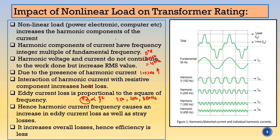Here you can see the nature of the harmonic current. If we extract the component of it, this is the 50 Hz component. If we add the third harmonic at 150 Hz, fifth harmonic at 250 Hz, seventh harmonic at 350 Hz, and ninth harmonic at 450 Hz together, the waveform is distorted. If we calculate the true RMS value of this, you will get an RMS value larger than the fundamental current. This increased RMS value impacts the losses, and hence the efficiency of the transformer goes on decreasing.